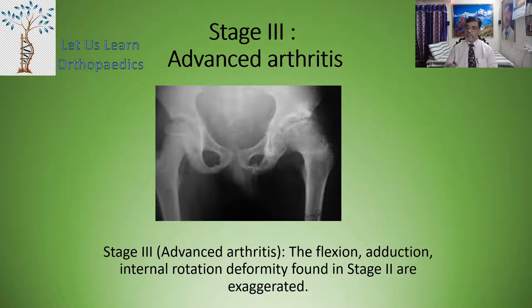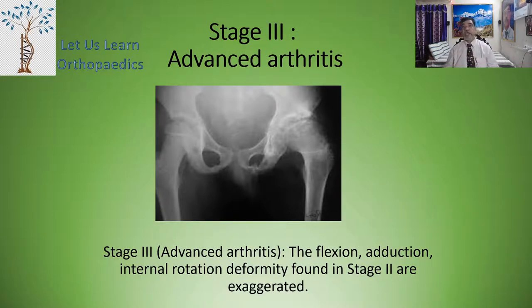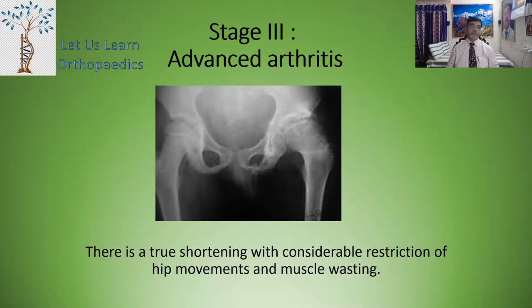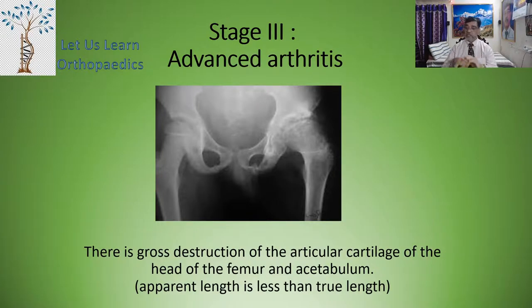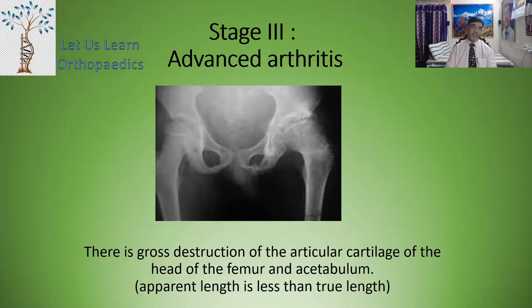Stage 3 — advanced arthritis. The flexion, adduction, and internal rotation deformity found in Stage 2 are exaggerated. There is true shortening with considerable restriction of hip movements and muscle wasting. There is gross destruction of the articular cartilage of the head of the femur and acetabulum. The apparent length is less than the true length.